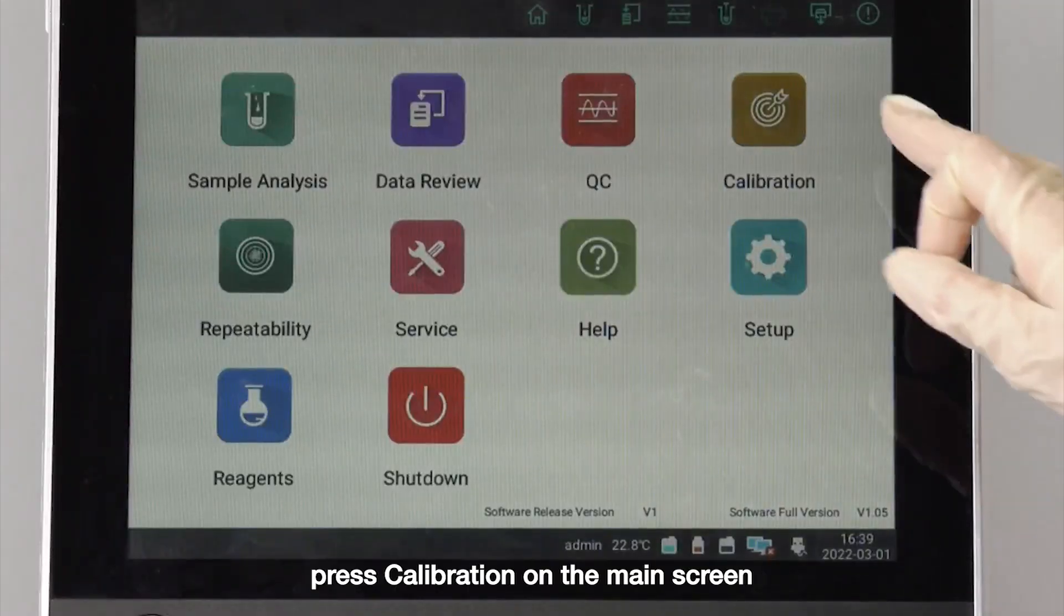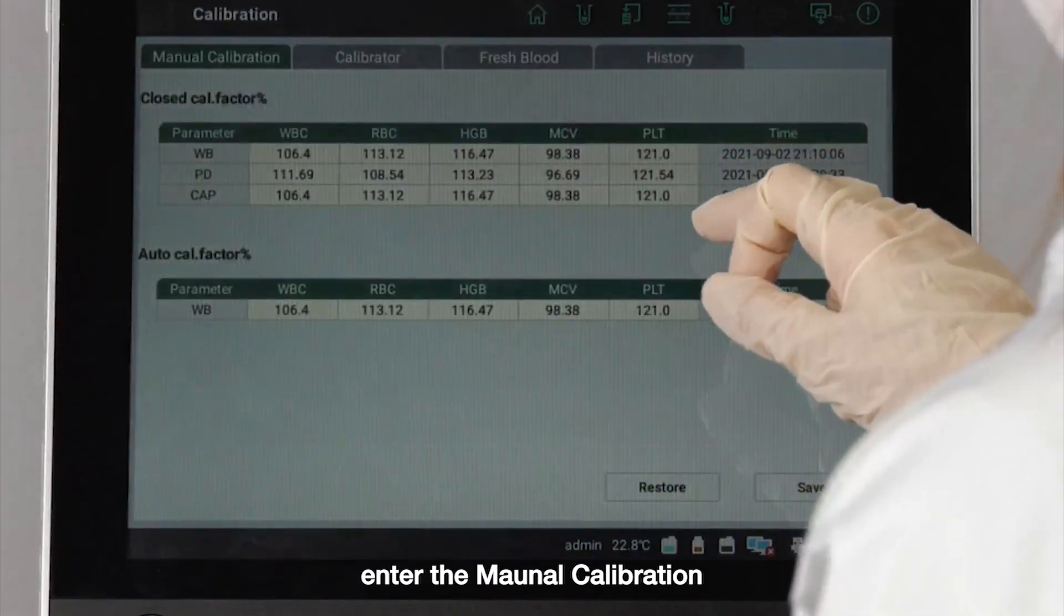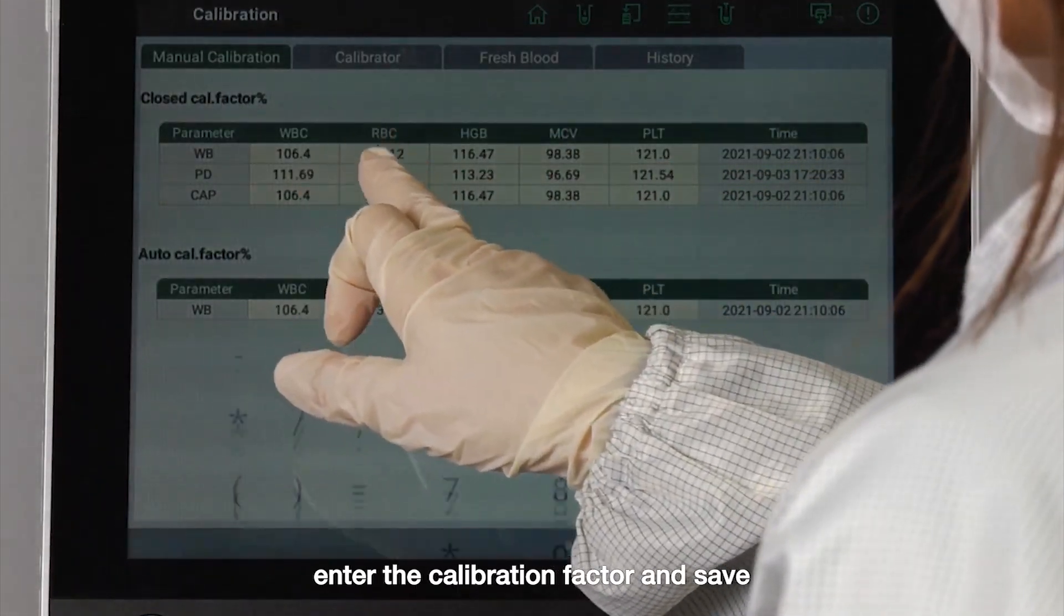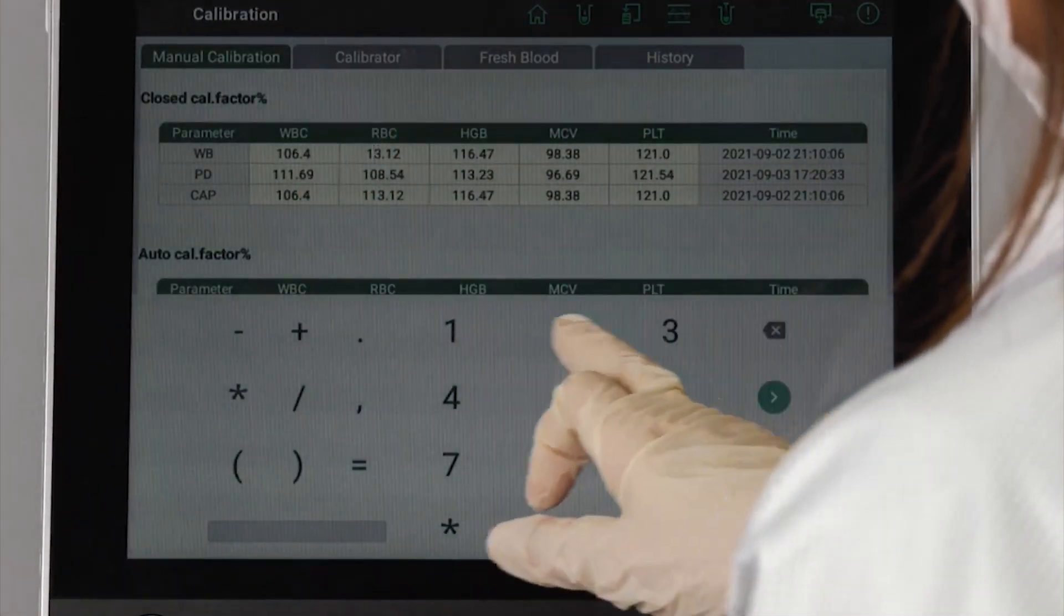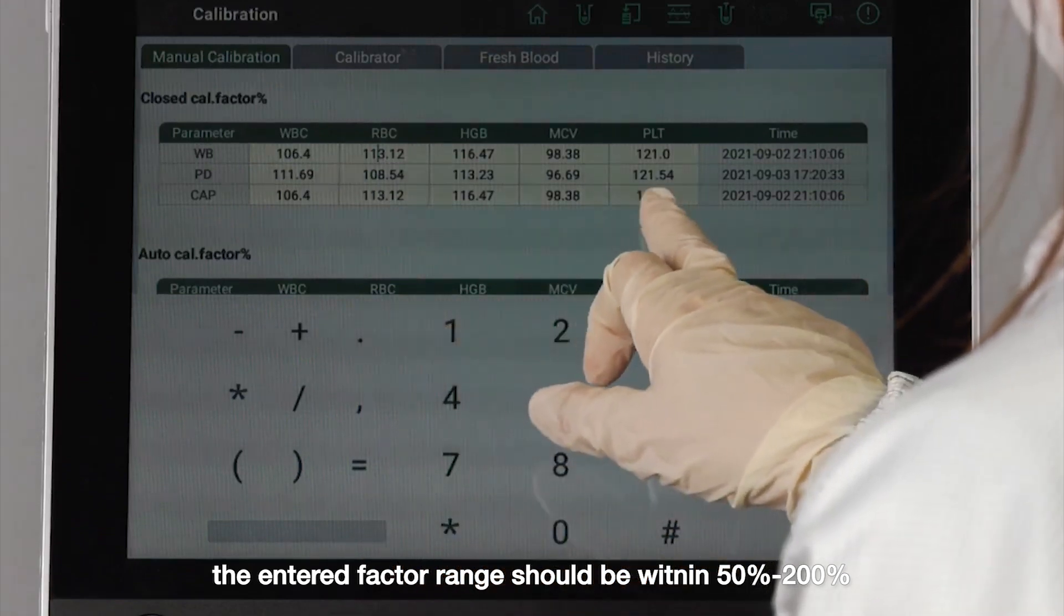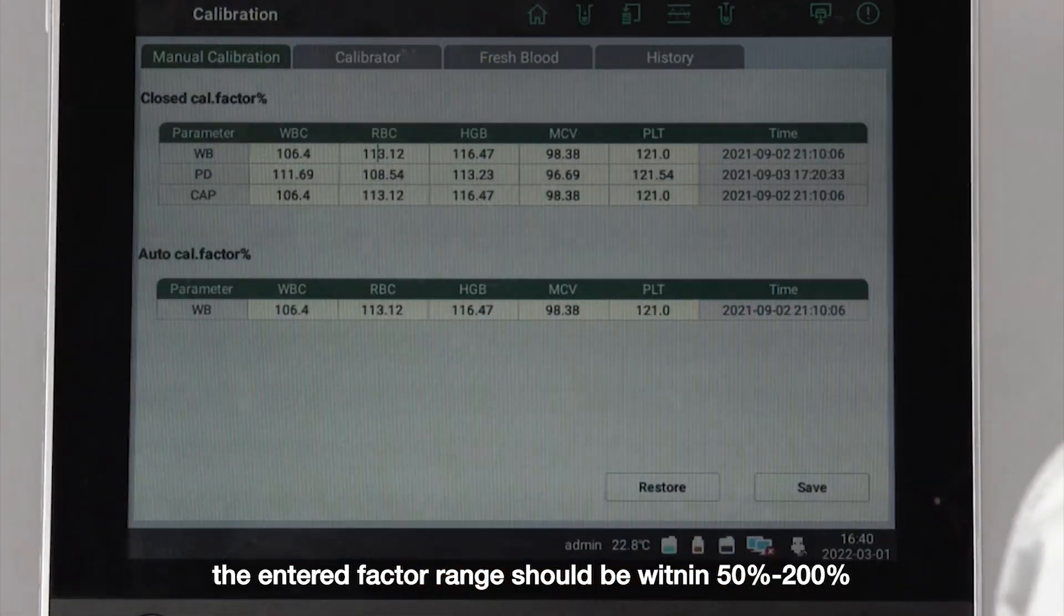Press calibration on the main screen and enter the manual calibration. Enter the calibration factor and save. The entered factor range should be written in 50% to 200%.